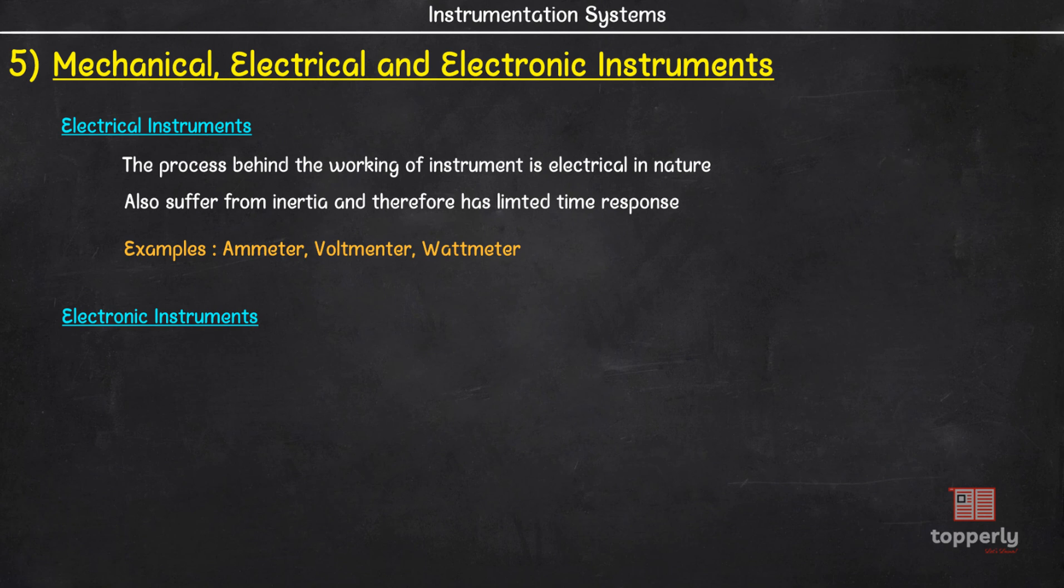Electronic instruments uses semiconductor devices. Since the only movement involved in these instruments is that of electrons, the response time is extremely small, owing to the very small inertia of the electrons. Also, with the use of electronic devices, even a very weak signal can be detected by using preamplifiers and amplifiers. An example of electronic instrument is the Hall effect current sensor.